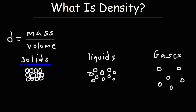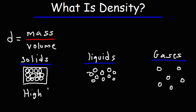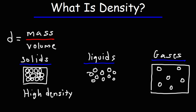Will it be solids, liquids, or gases? Generally speaking, most solids have a high density compared to liquids and gases. Gases have the lowest density of the three phases.